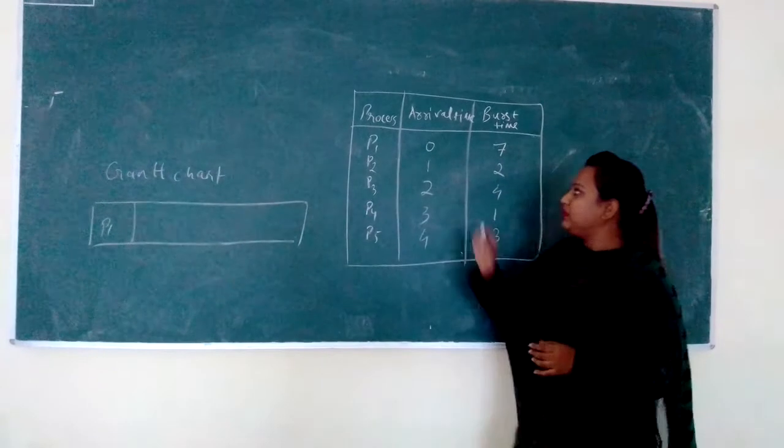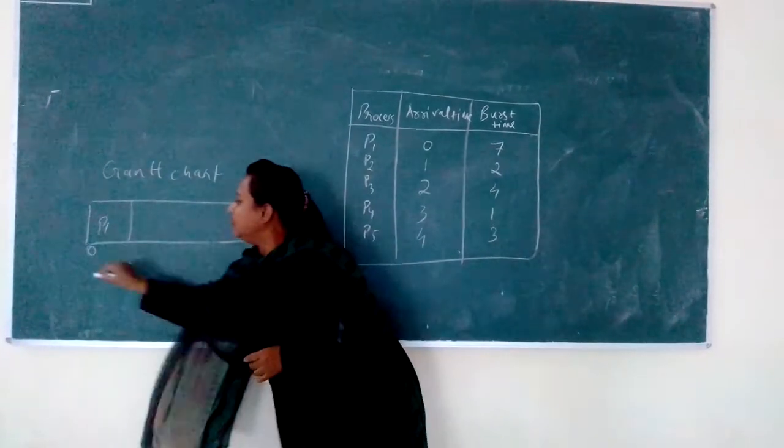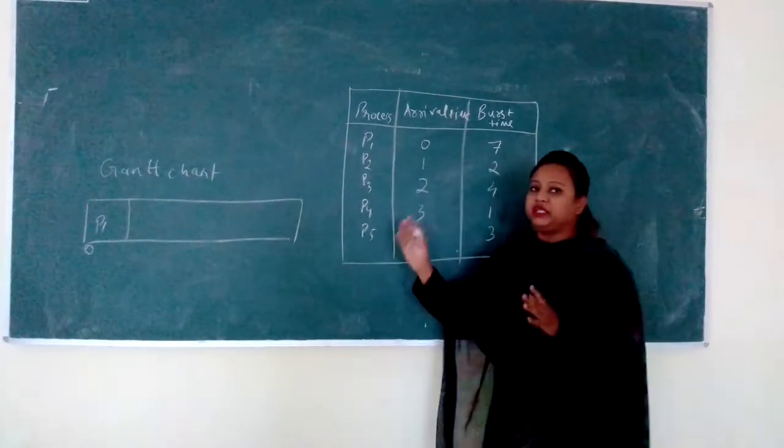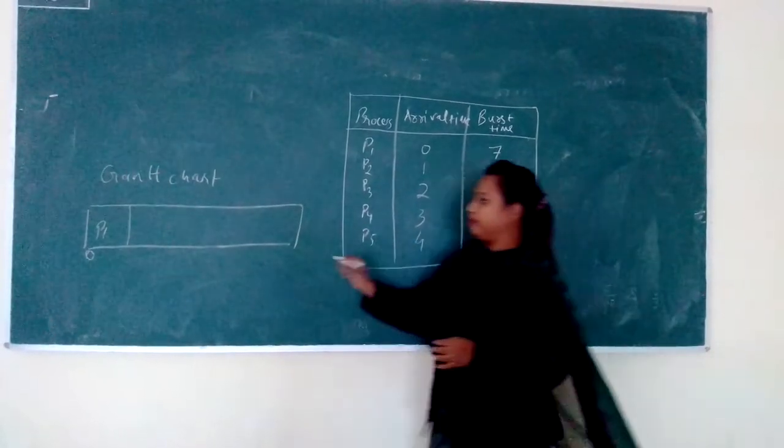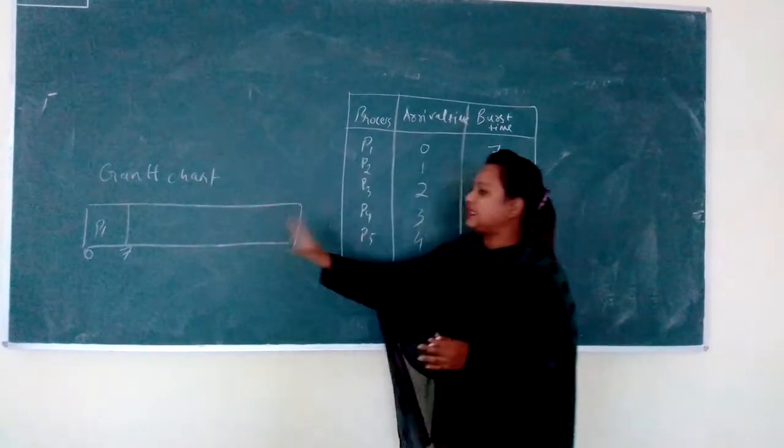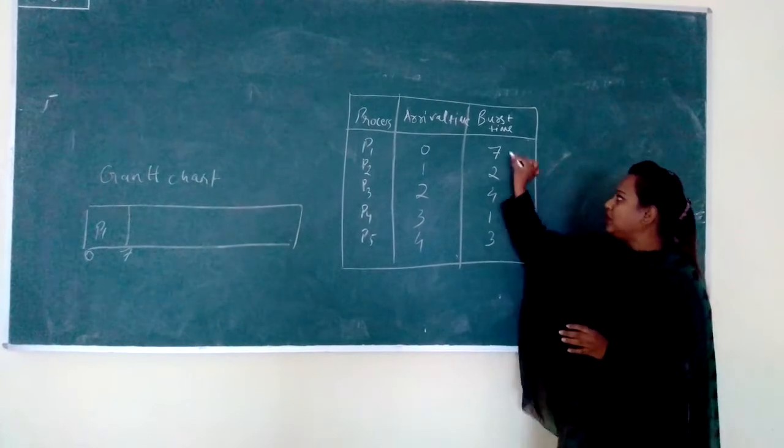The arrival time for P1 is 0 and the burst time for P1 is 7. P1 is completing at 7, it has got completed.